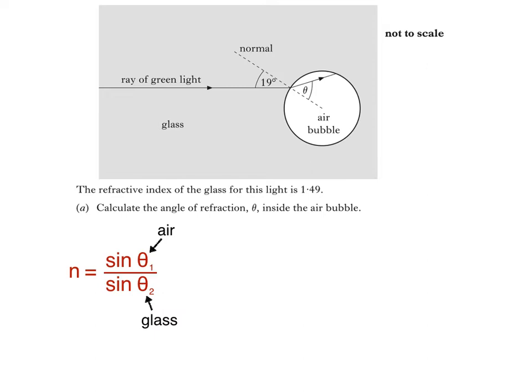It's important to remember that whether the light's passing from air to glass or from glass to air, theta 1 is always the angle in air, and theta 2 is always the angle in the medium. So the angle we're being asked to find is theta 1, which can be found by rearranging the equation like this.